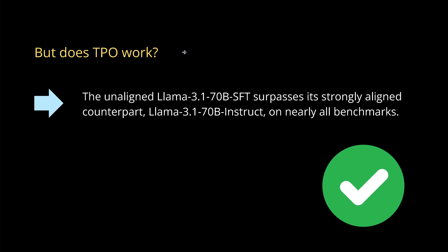But does it work? The beauty is: if you take an unaligned LLaMA 7B, supervised fine-tuned, and apply TPO methodology during inference, it surpasses all the strongly aligned counterparts of the 7B instruction models on nearly all benchmarks with just two iterations. So a big yes — it works beautifully.